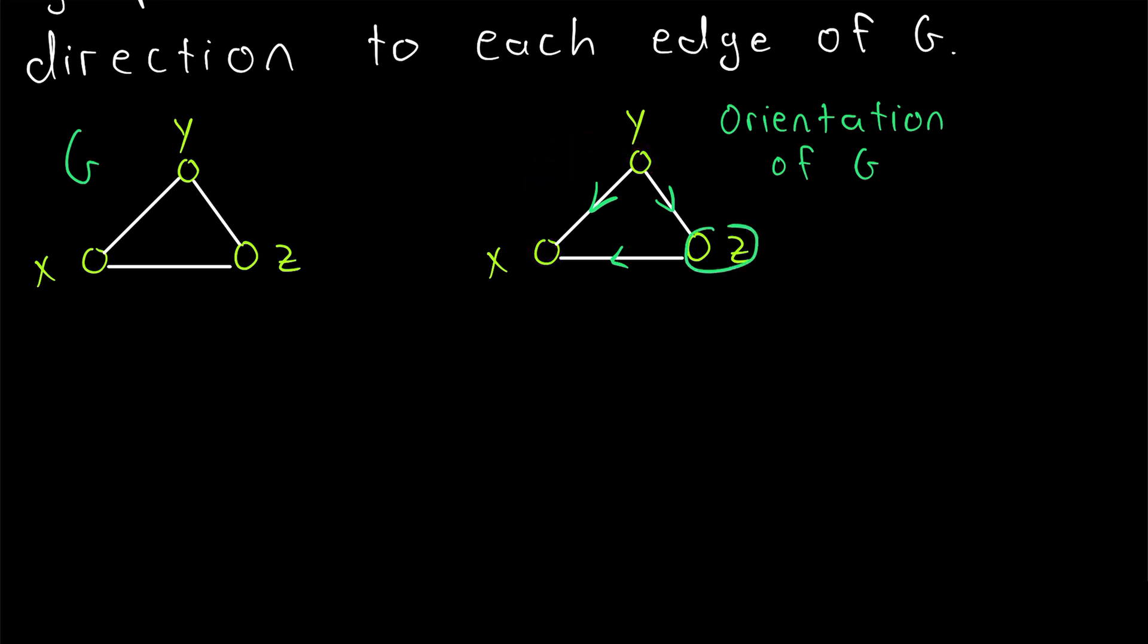Similarly, Z is adjacent to X, but Z is not adjacent from X. There's no directed edge going from X to Z. So our orientation again has no symmetric edges.